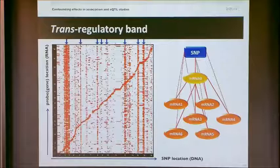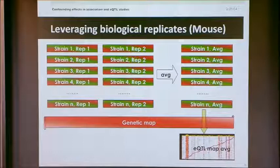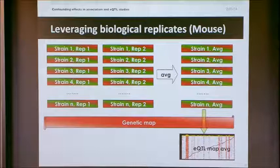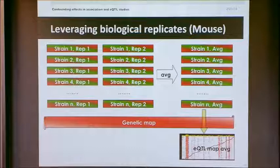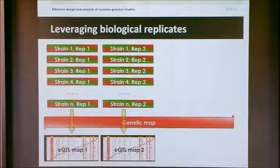We looked at a classic dataset from BXD mice that reported many hotspots. BXD mice are inbred strains, so you can get genetically identical animals. The original researchers collected two animals per strain and averaged the expression values before doing their eQTL analysis. Since we're interested in power and robustness, we randomly split the replicates into two groups, did eQTL analysis on each separately, and compared to see how similar they were to each other and to the combined analysis. To quantify hotspot strength, we summed all the negative log p-values in each column as a heuristic.